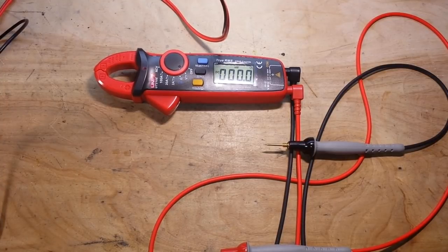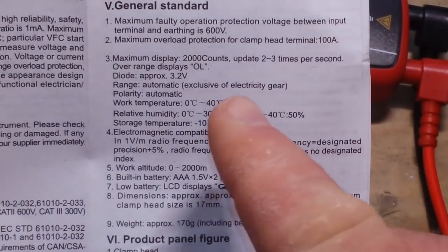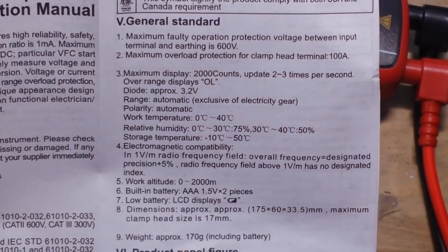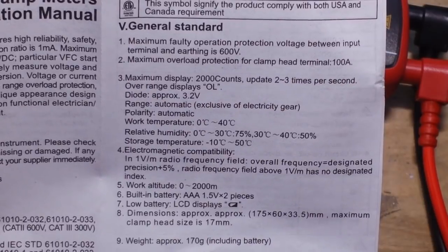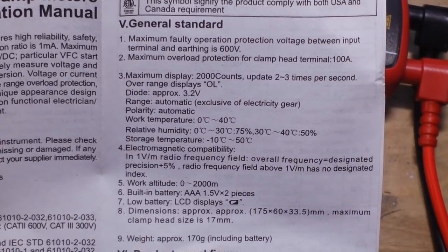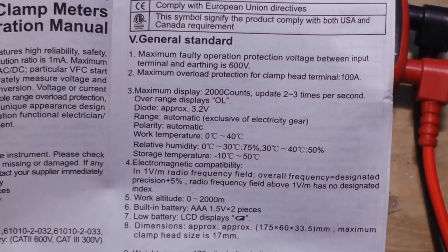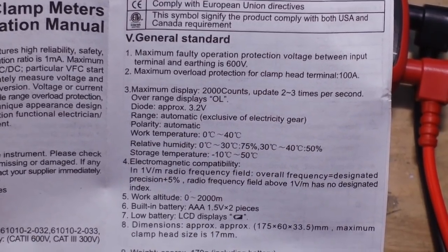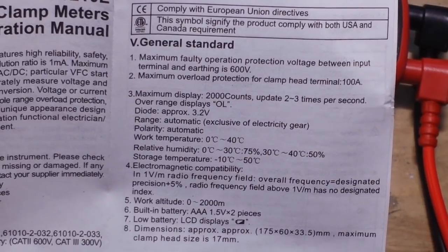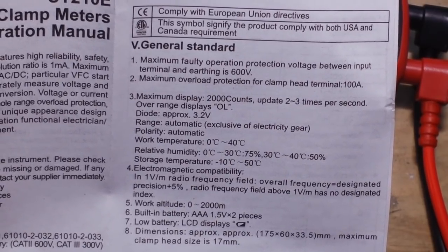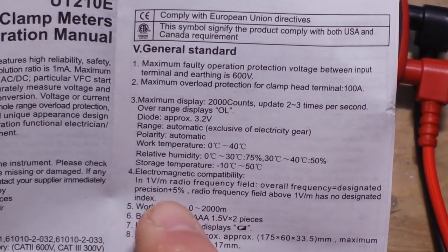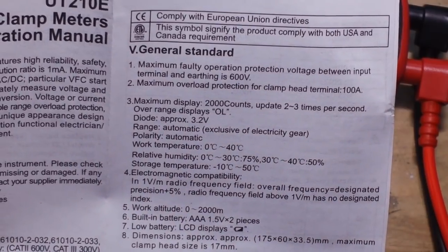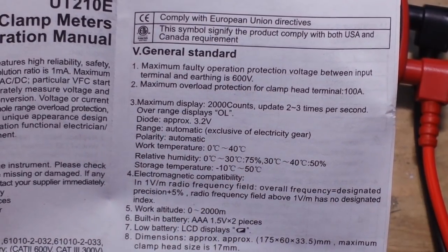All right, on to our next test. We move to the next test. Let's look at this here real quick. Maximum display 2000 counts, update two or three times a second, so I was pretty close. Overrange displays OL, which a lot of people think means overload. I guess probably in some cases it does, but mostly means open loop. Diode 3 volts range, polarities automatic. Work temperature, relative humidity, electromagnetic ability 1 volt per meter radio frequency field, overall frequency okay.